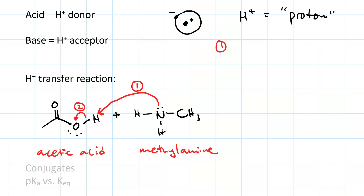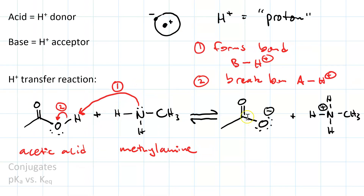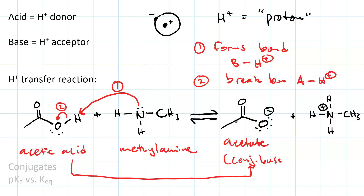Curved arrow number 1 forms a bond from the base to the proton. Curved arrow number 2 breaks the bond between the acid and the proton. On the right side of the reaction, we're showing the products. This is acetate — it is the conjugate base of acetic acid. The acetic acid minus a proton gives you the conjugate base, acetate.